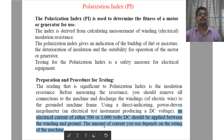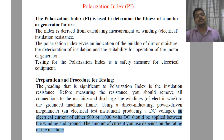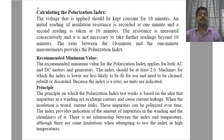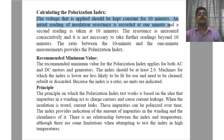The amount of current you use depends on the rating of the machine. The voltage applied should be kept constant for 10 minutes. An initial reading of insulation resistance is recorded at 1 minute, and a second reading is taken at 10 minutes.